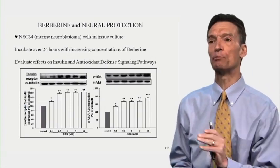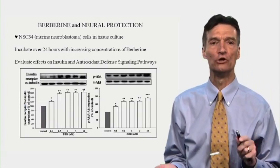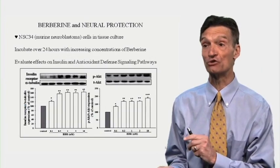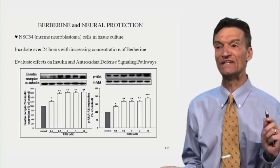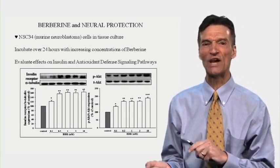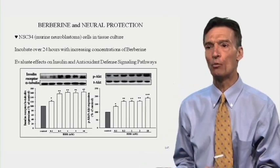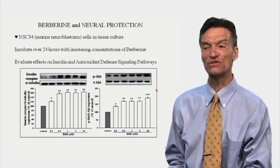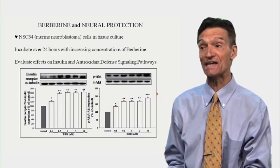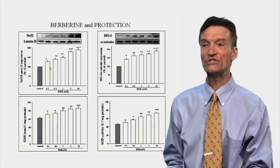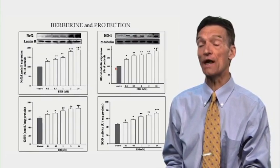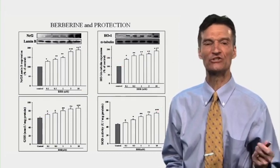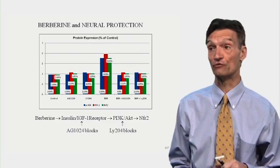Back to berberine and neural protection. We're going to take mouse-derived neural cells in tissue culture, incubate them over 24 hours with increasing doses of berberine, and evaluate effects on insulin and antioxidant defense signaling pathways — which in a sense are one and the same. With berberine, we see increased expression of the insulin receptor, increased tyrosine phosphorylation of the downstream enzyme AKT, translocation of Nrf2 and its work products heme oxygenase-1, glutathione reductase, and superoxide dismutase. Berberine is cranking these out via translocation of Nrf2.